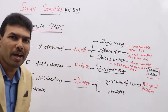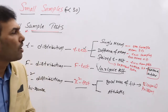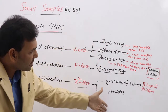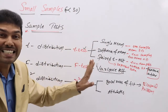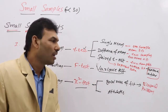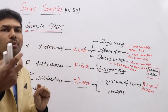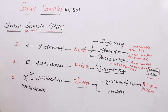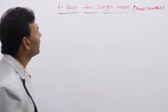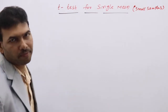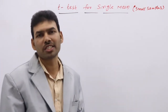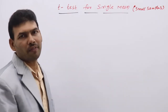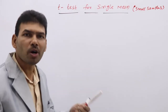The only challenge in small samples is identifying the suitable test for the given problem, because we have 6 tests (3 + 1 + 2). Among these 6, you have to select the suitable one. Now, coming to T-test for single mean: T-distribution is used to test small samples only. Here we are going to test the population mean for small samples.